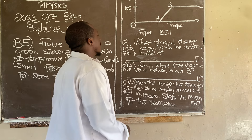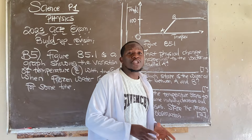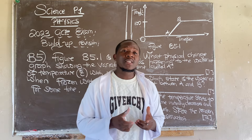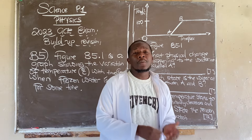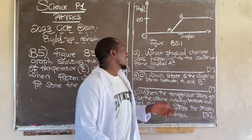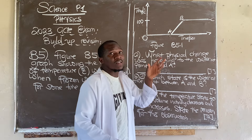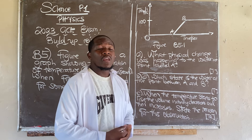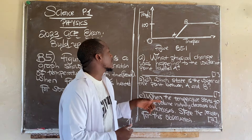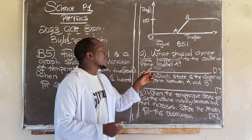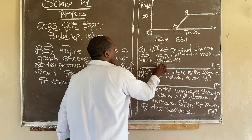The question asks: what physical change was happening in the water at point A? There's a very important difference between a physical change and a physical state. A physical state is the state of matter in which a certain substance exists. A physical change is a process that allows a change in the state of matter. So at point A, the water is in a solid state — it is frozen. Therefore, if the question demands what physical change was happening at point A, we can say freezing, or solidification. In this case, we say freezing.